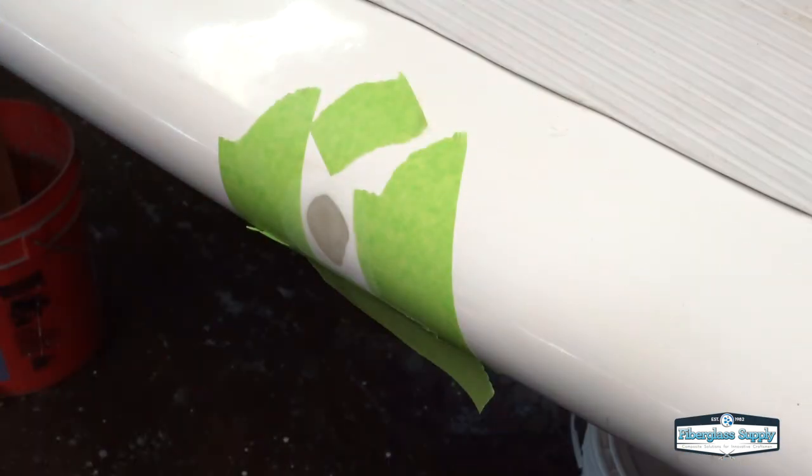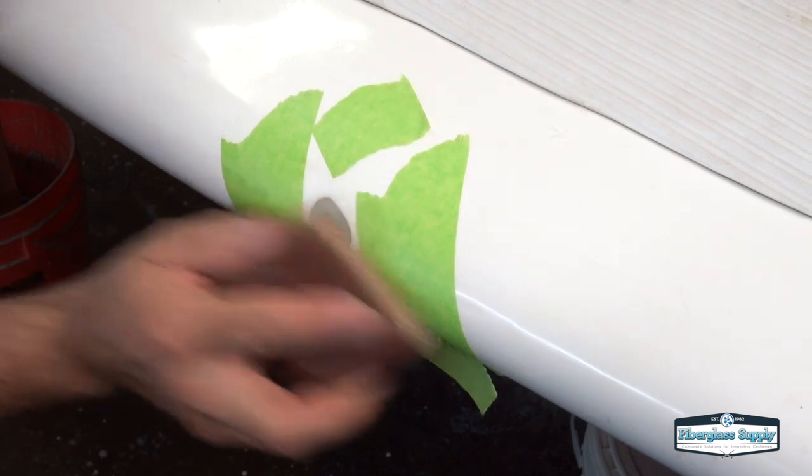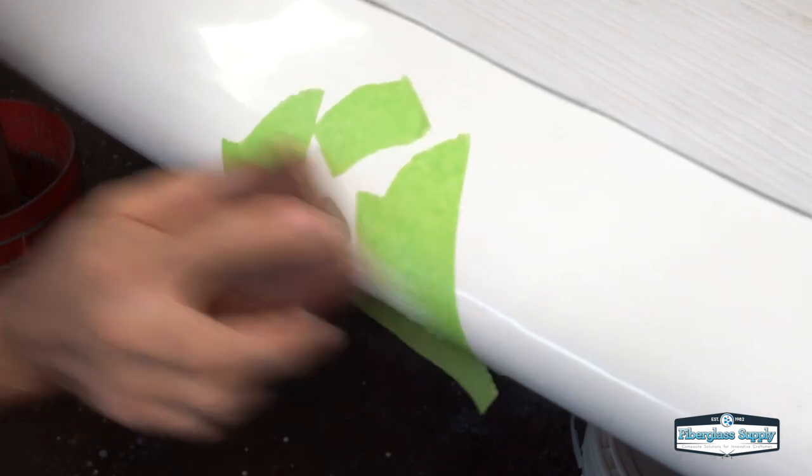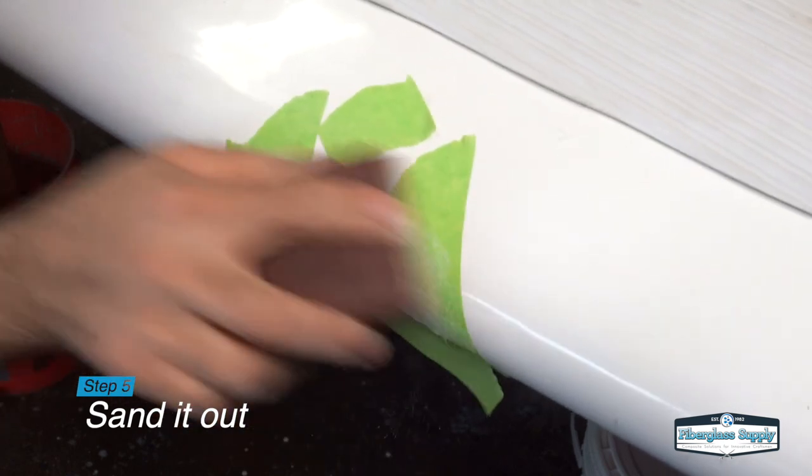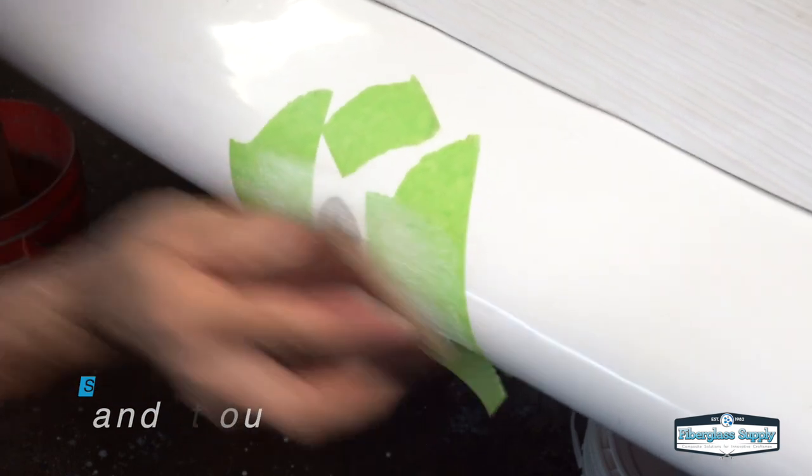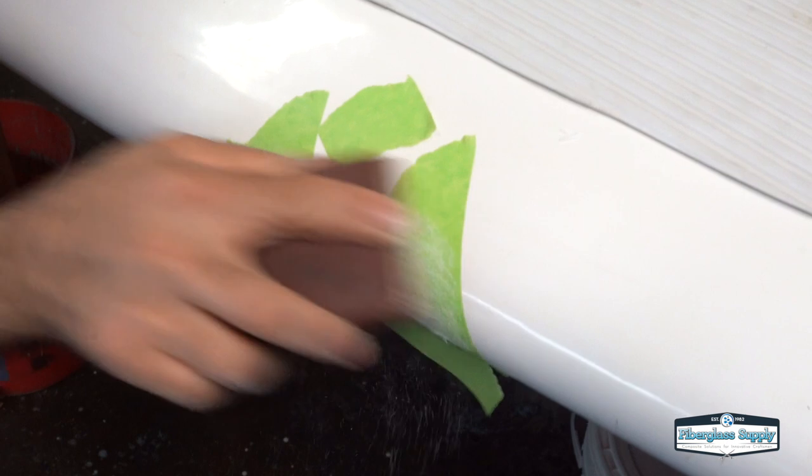So we put that piece of peel ply on there and once the resin's cured, we're moving on now to step five, which is to sand it out. So we remove the peel ply before we sand and now we're going to begin to fair that repair area out.